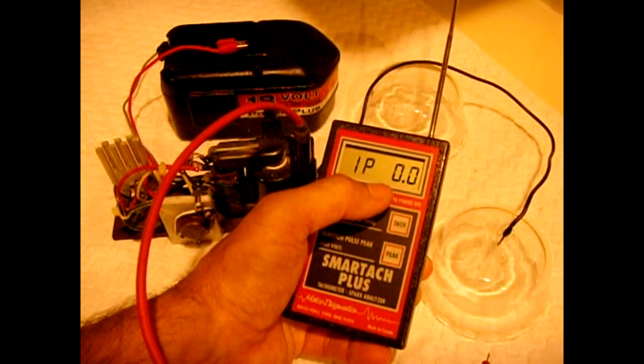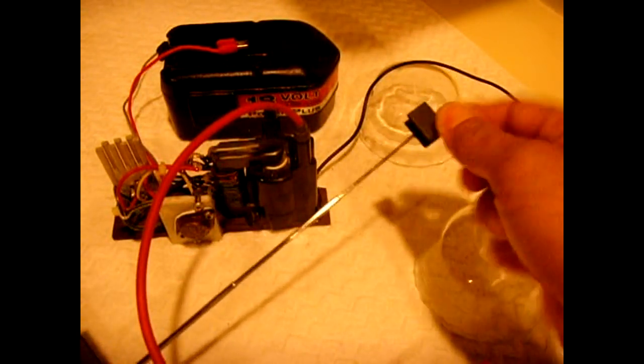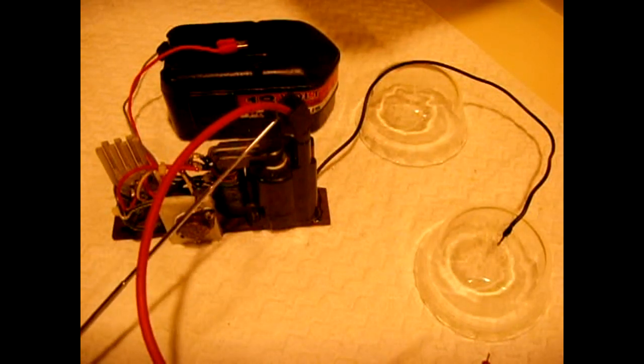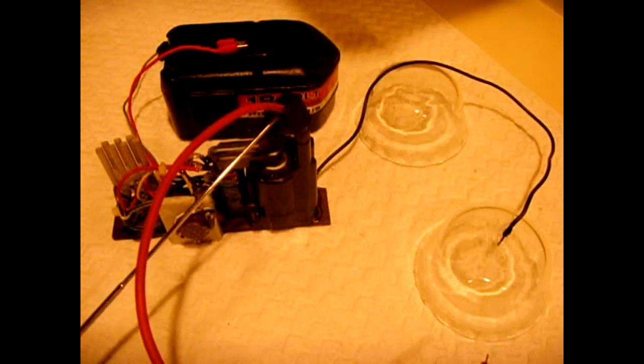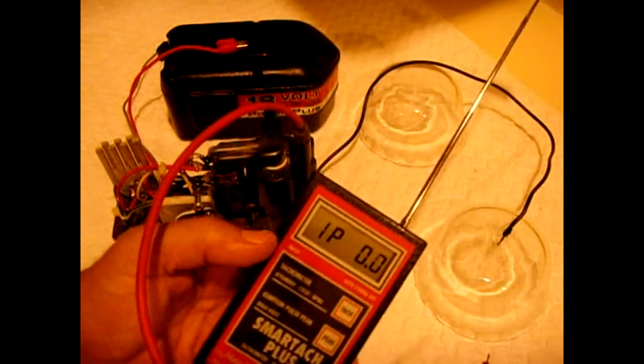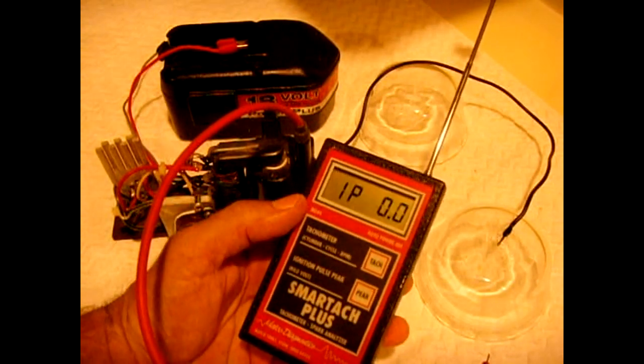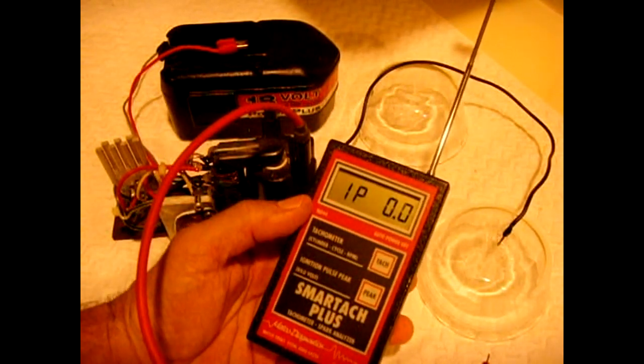The reason why this type of device comes in so handy is because you can actually clip this on the spark plug wire close to where the spark plug is in the engine. And you could take voltage readings. If you see one plug is much higher voltage than the other, that'll alert you that either the gap is too wide or there is a problem in the wire.